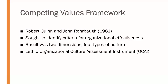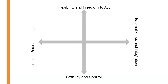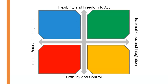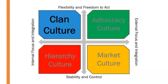From the work of Quinn and Rohrbaugh we find two dimensions. The first spectrum is internal focus and integration versus external focus and integration — is the organization more internally or externally focused? The other dimension is flexibility and freedom to act versus stability and control. When you put those together, you get four compartments leading to four different types of organizational culture: clan culture, adhocracy culture, market culture, and hierarchy culture.